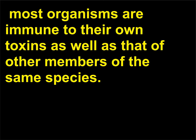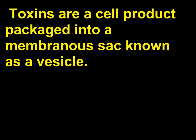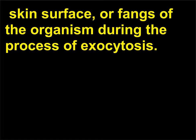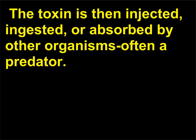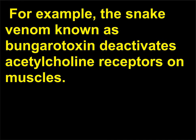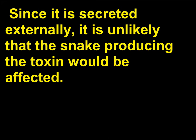Why don't organisms that produce toxins die during the synthesis of toxic material? Most organisms are immune to their own toxins as well as those of other members of the same species. Toxins are a cell product packaged into a membranous sac known as a vesicle. The contents of the vesicle are secreted into the salivary gland, skin surface, or fangs of the organism during the process of exocytosis. The toxin is then injected, ingested, or absorbed by other organisms, often a predator. For example, the snake venom known as bungarotoxin deactivates acetylcholine receptors on muscles. Since it is secreted externally, it is unlikely that the snake producing the toxin would be affected.